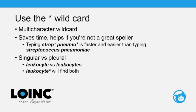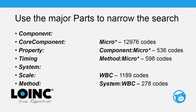The second tip is using the wildcard asterisk, which is a multi-character wildcard that can save time if you're looking for terms that are long to type or if you're not a great speller. For example, typing 'strep* pneumo*' is faster and easier than typing 'streptococcus pneumoniae.' The asterisk also handles singular versus plural forms — by adding a star to the end of your search term, you can find both forms.